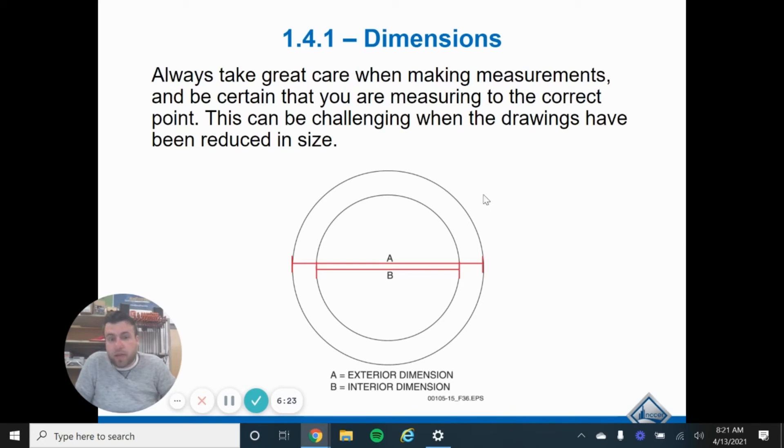Sometimes you can do a measurement from center to center, and then you have to figure out the distance or thickness of your materials. So just make sure you know where it's starting from. And there's going to be something that tells you this, but make sure you know you're pulling from the right location. Is it from the outside of the walls or the inside of the walls? Is it from the outside of the trim? Make sure you're pulling the right measurement.